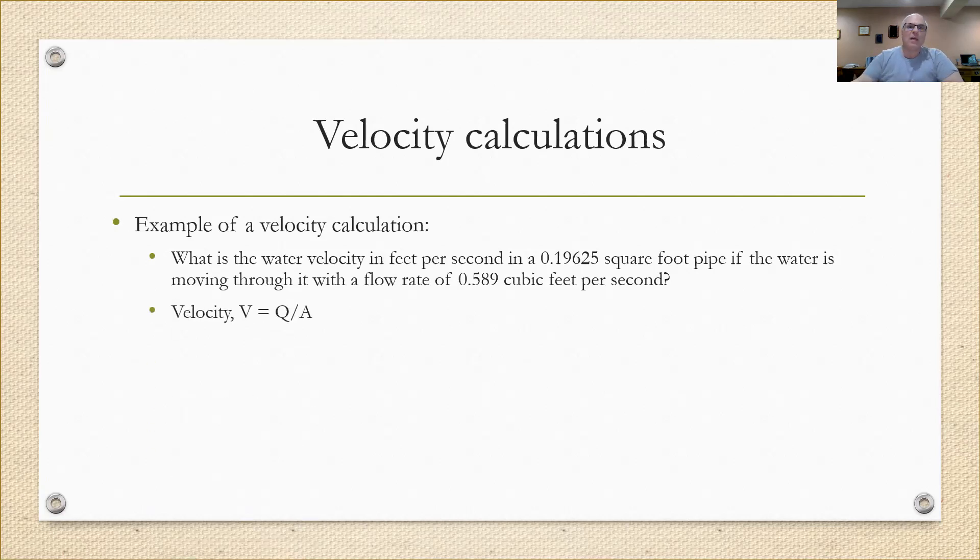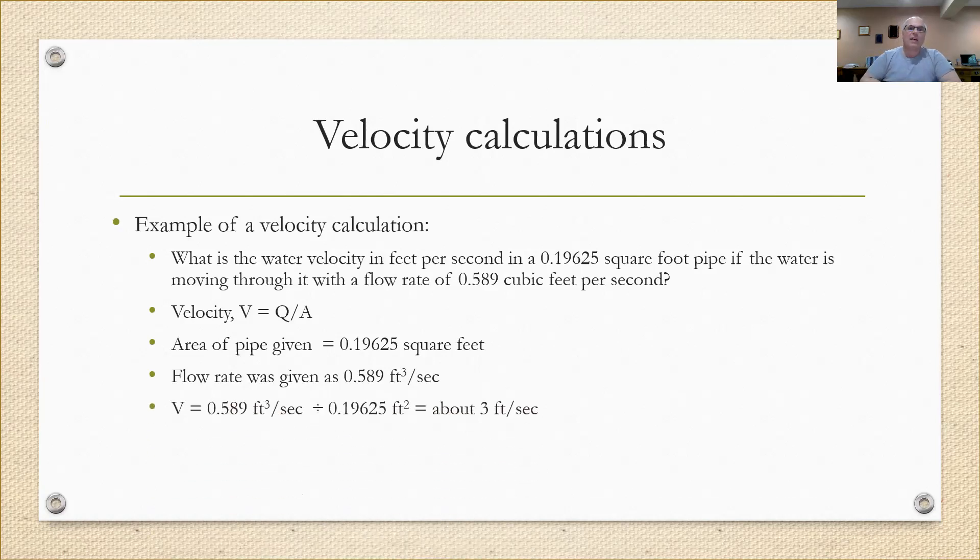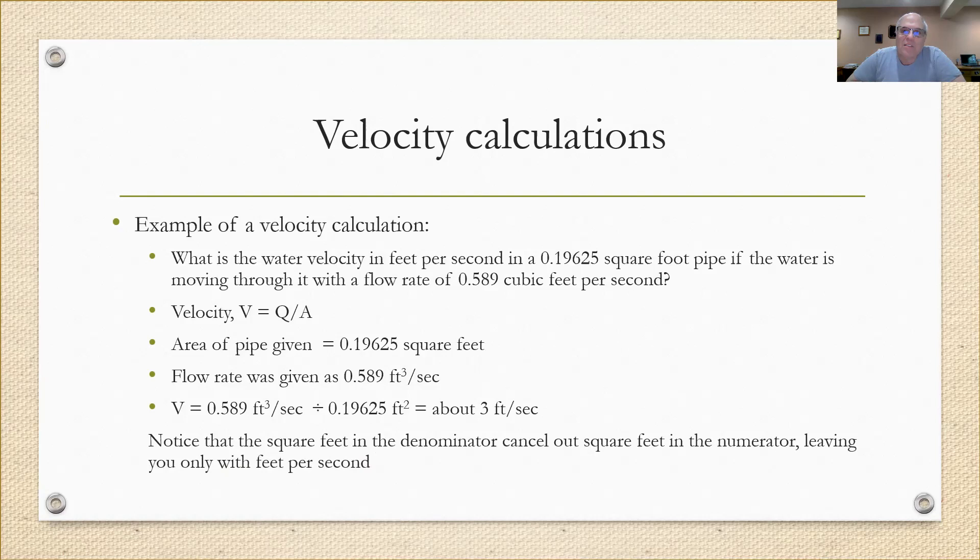We're going to use the velocity equation, V equals Q divided by A. The area of the pipe was given as 0.19625 square feet. The flow rate was given at 0.589 cubic feet per second. It's just a matter of plugging in the numbers. The velocity is 0.589 cubic feet per second divided by 0.19625, which comes out to about three feet per second. Typically when engineers design pipes for velocity, they try to be somewhere between one and five feet per second. So if you come out with 50 feet per second, maybe you've done your math wrong.